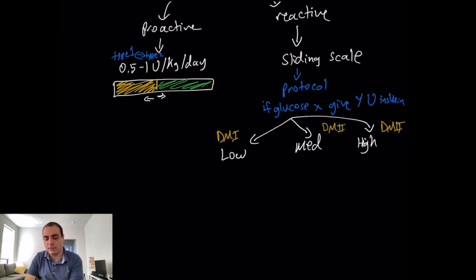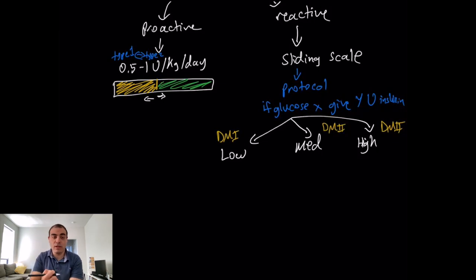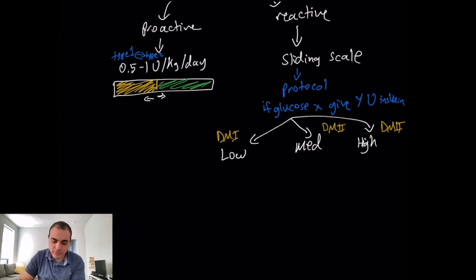Never put a type 1 diabetic on a moderate or high dose sliding scale. If you do, you'll give them a large amount of insulin for any glucose change and they will become hypoglycemic.